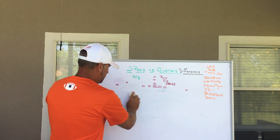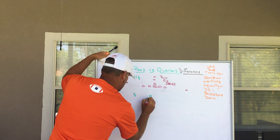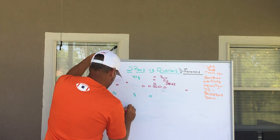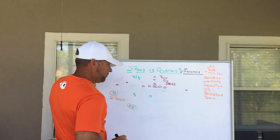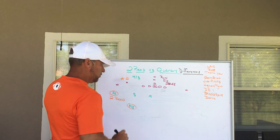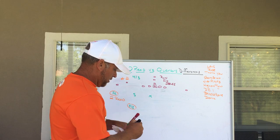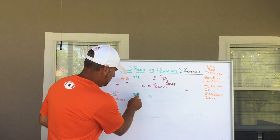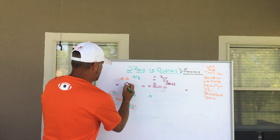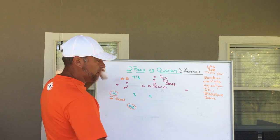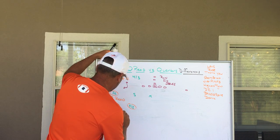Two-read came about as a pattern-match adaptation and variation to quarters because of what it does: we play our Sam linebacker inside as an apex player, and the two-read is actually played between the corner and the safety. They are going to read the number two receiver, and depending on what number two does, that dictates what the coverage becomes. In quarters, the Sam linebacker is responsible for two to the flat — but when I put the Sam inside, I can't make him responsible for two to the flat, so the corner handles two to the flat instead.